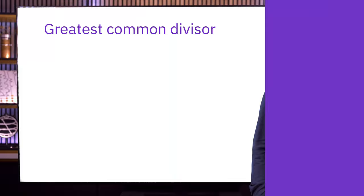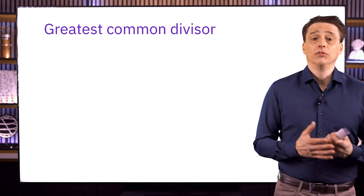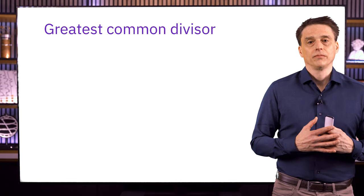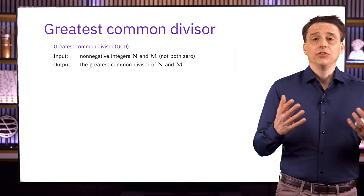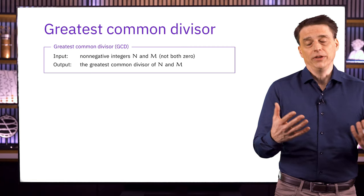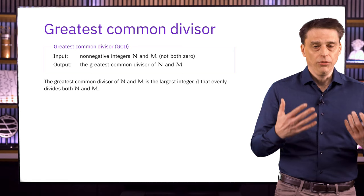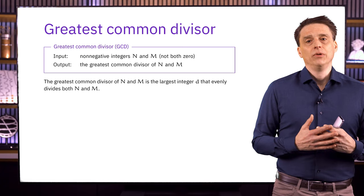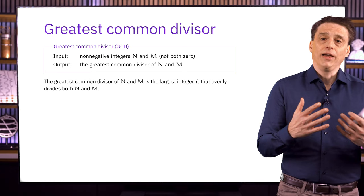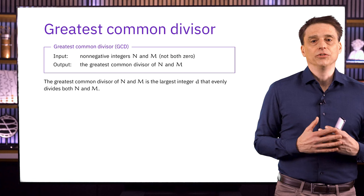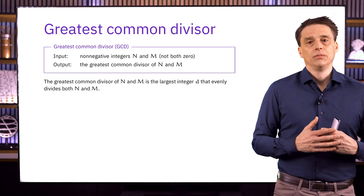Now let's consider a different computational problem: computing the greatest common divisor, or GCD, of two non-negative integers. The input consists of two numbers n and m, and we assume they aren't both equal to zero. The goal is to compute the GCD of these two numbers, which is the largest integer d that evenly divides both n and m. If you think about the prime factorizations of n and m, the GCD is the product of all prime numbers that divide both n and m, raised to the minimum of the powers that appear in the two prime factorizations. It's related to the problem of integer factorization, but it turns out to be much, much easier for computers to solve.